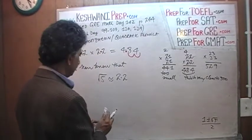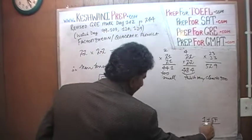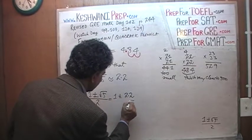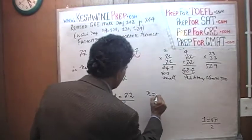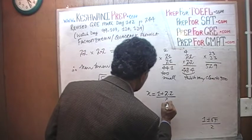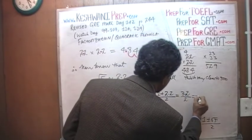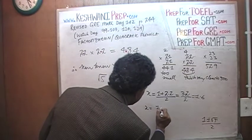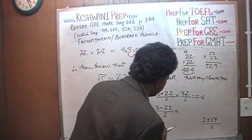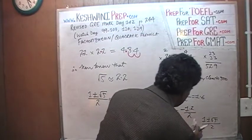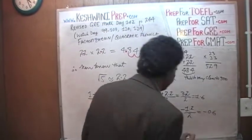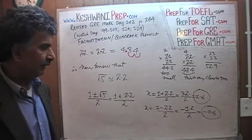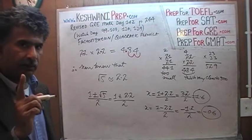We put that back in: 1 plus or minus root 5 over 2 equals 1 plus or minus 2.2 over 2. So x equals 1 plus 2.2 over 2, which is 3.2 over 2, which is 1.6. Or x equals 1 minus 2.2 over 2, which is negative 1.2 over 2, which is negative 0.6. The two approximate roots are positive 1.6 and negative 0.6.